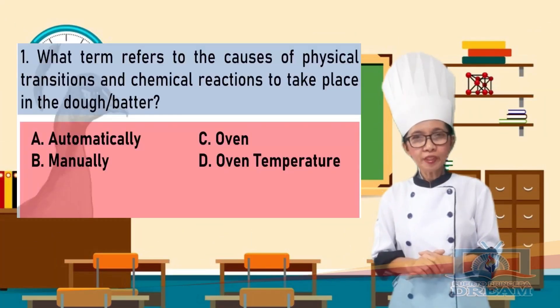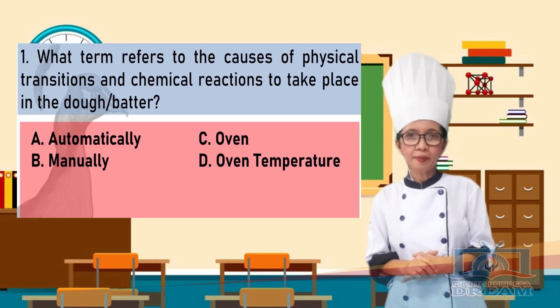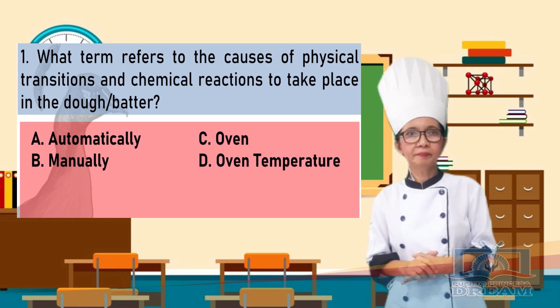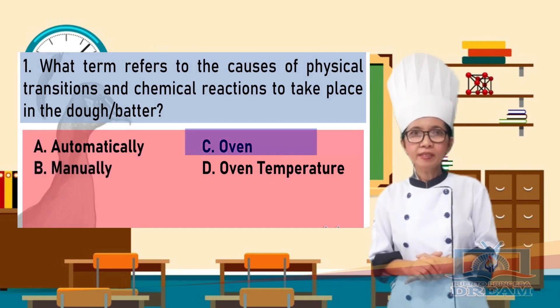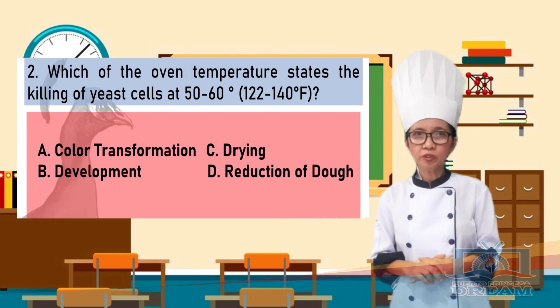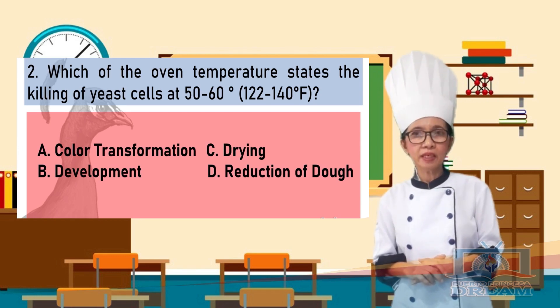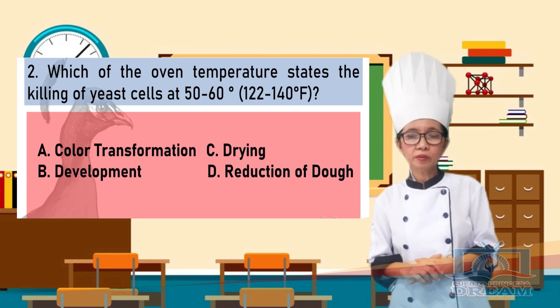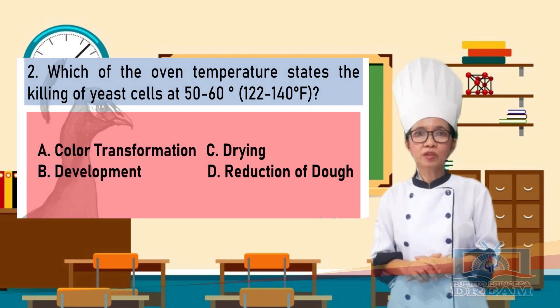Number 1: What term refers to the causes of physical transitions and chemical reactions to take place in the dough or batter? A. Automatically, B. Manually, C. Oven, D. Oven temperature. Number 2: Which of the oven temperature stages describes the killing of yeast cells at 50 to 60 degrees centigrade or 122 to 140 degrees Fahrenheit? A. Color transformation, B. Development, C. Drying, D. Reduction of dough.